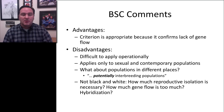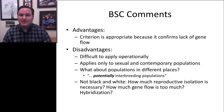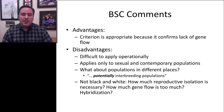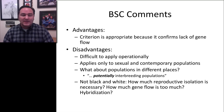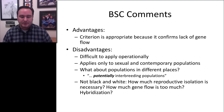There's also the problem of 'potentially interbreeding' populations — it's not entirely black and white. How much reproductive isolation is necessary? How much gene flow is too much? What about hybridizations?